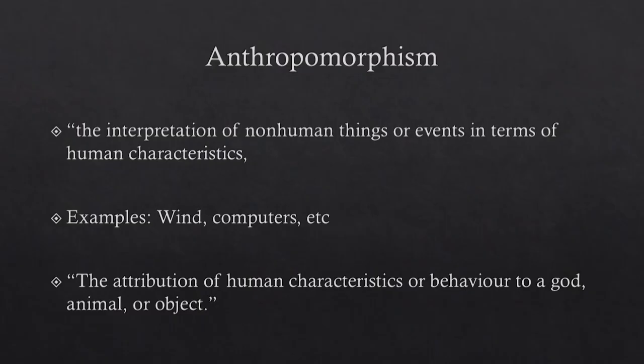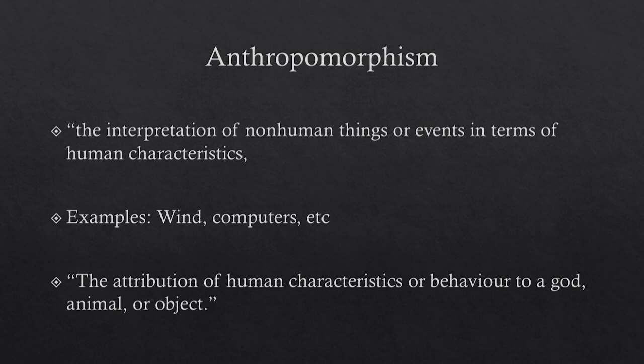I would also like to look at anthropomorphism. The dictionary definition is the interpretation of nonhuman things or events in terms of human characteristics. For example, we can say the wind is talking — a particular kind of wind can be interpreted as communicating a message to human beings — or we talk about computers being evil, as if they are malicious. The attribution of human characteristics or behavior to a god, animal, or object can be defined as anthropomorphism. That is it for today — I will see you in the next session. Thank you.